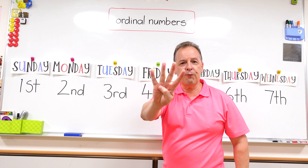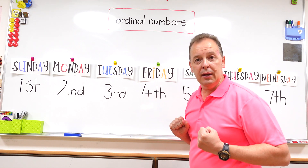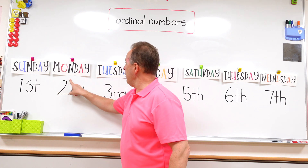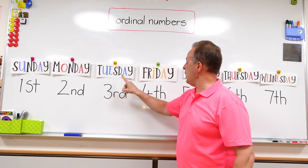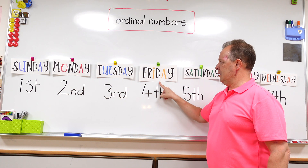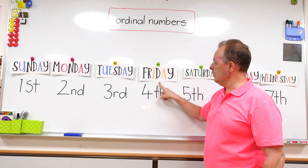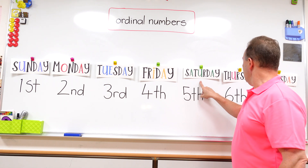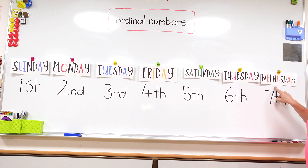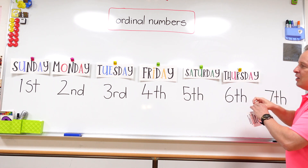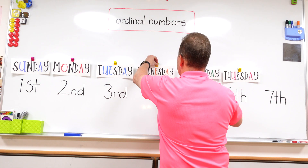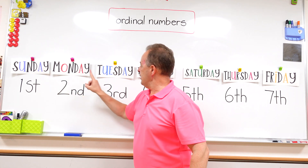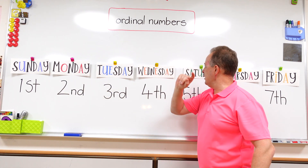What's the fourth day of the week? Can you tell me? Let's check — Sunday, Monday, Tuesday... Friday? No, not Friday. Is it Saturday? No. It's Wednesday! Yes. Wednesday is the fourth day of the week. So we have Sunday, Monday, Tuesday, Wednesday.